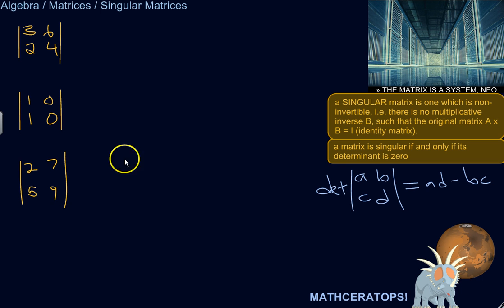Alright, so let's just practice with these three matrices and determine whether they're singular or whether they actually do have a multiplicative inverse out there somewhere. So what's the determinant of this one? So A is 3, B is 6, C is 2, D is 4.